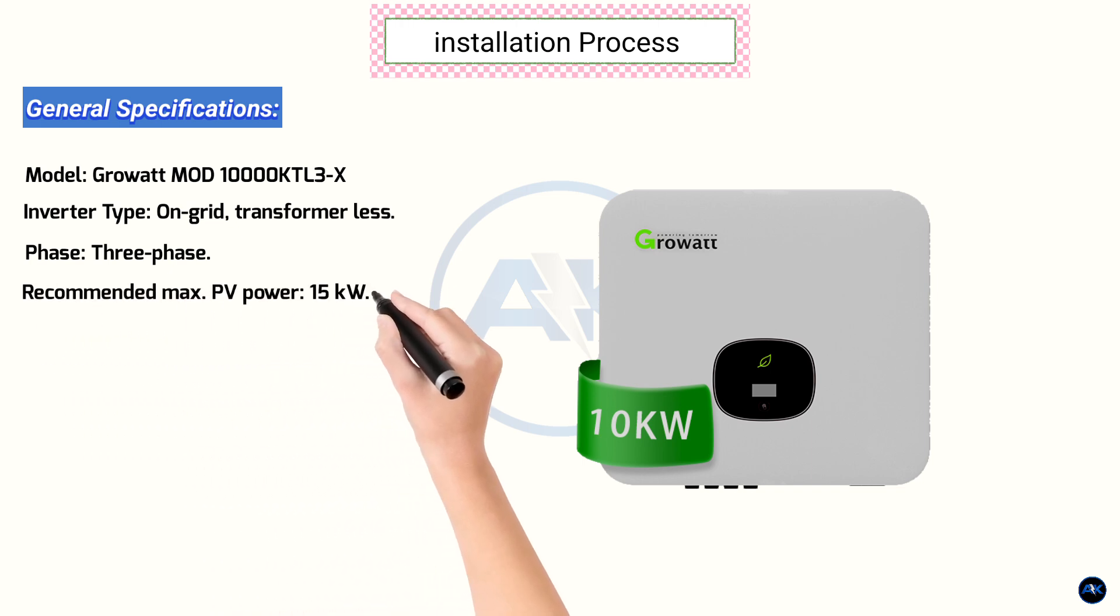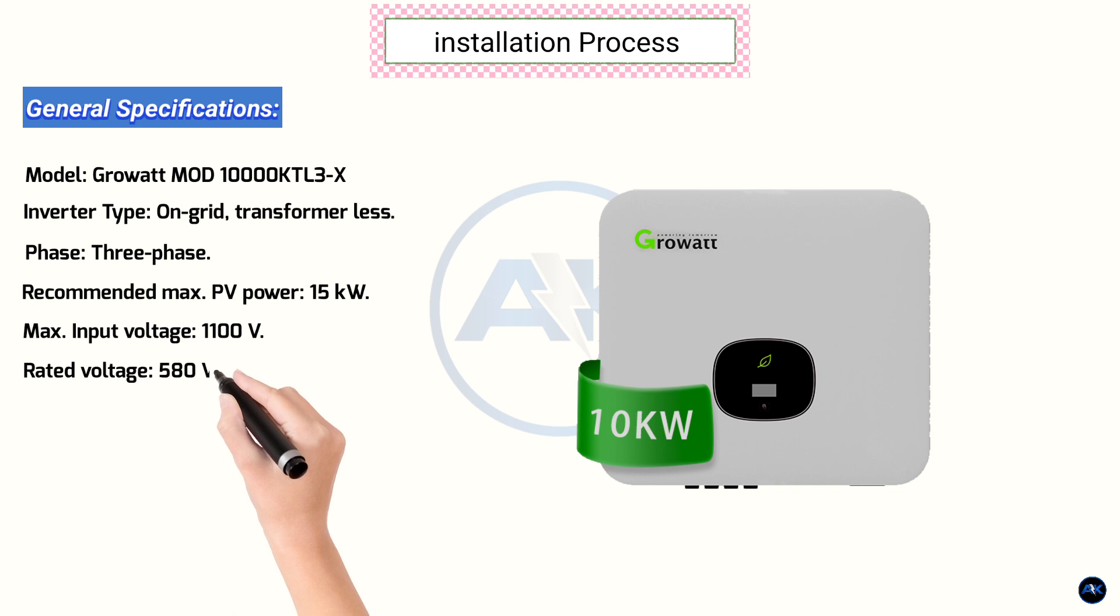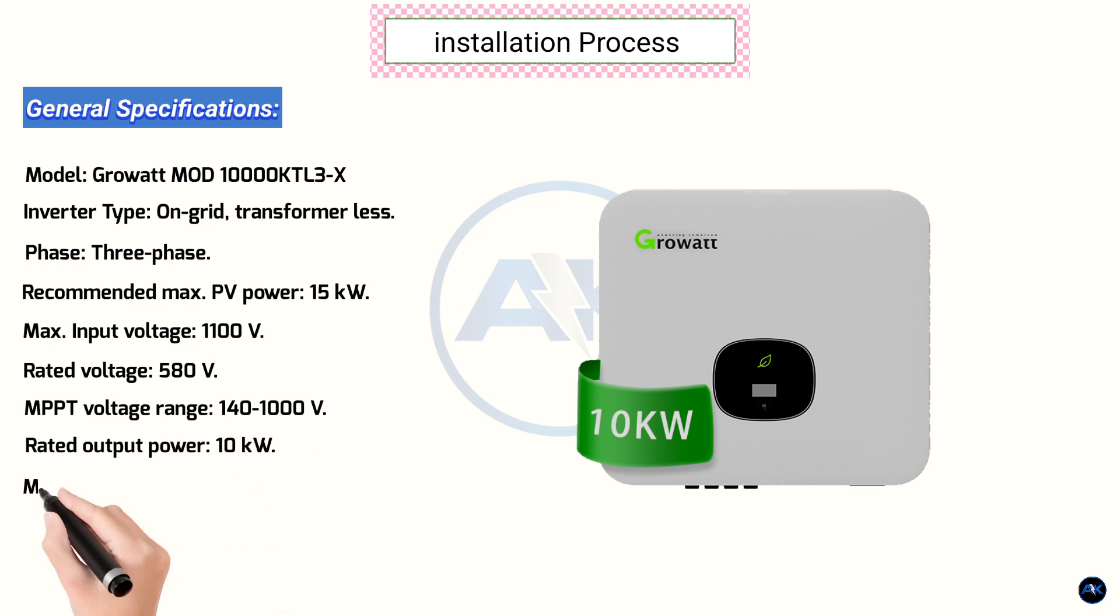Recommended max PV power 15kW, max input voltage 1100V rated voltage 580V, MPPT voltage range 140 to 1000V, rated output power 10kW, max output power 11kW, max efficiency 98.6%, operating temperature range -25 degrees C to plus 60 degrees C.